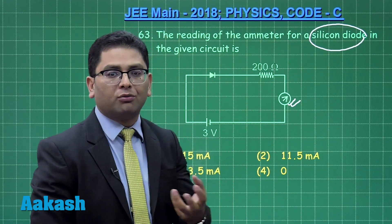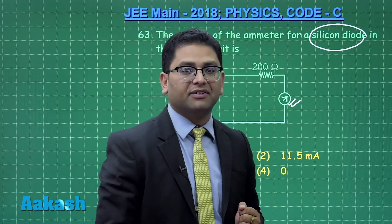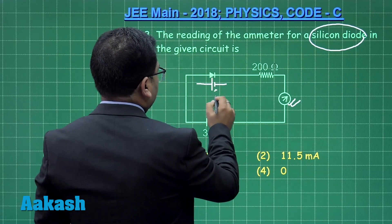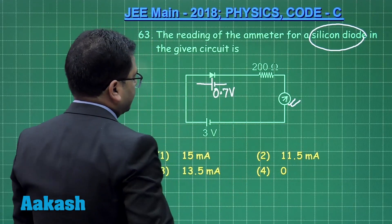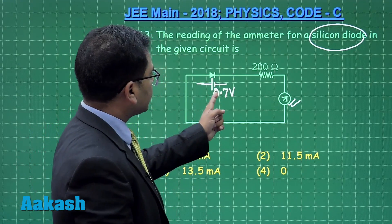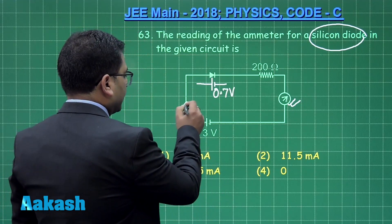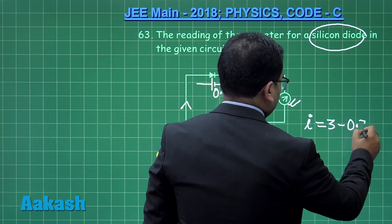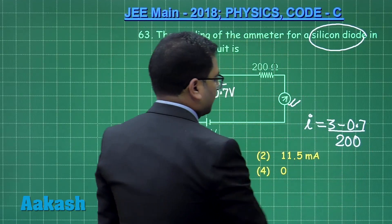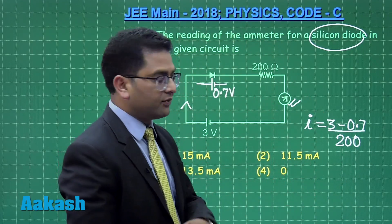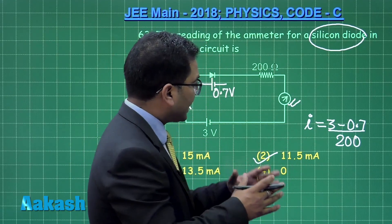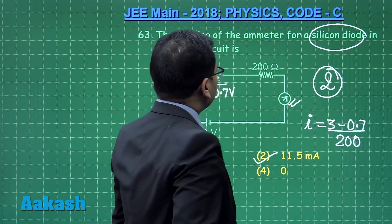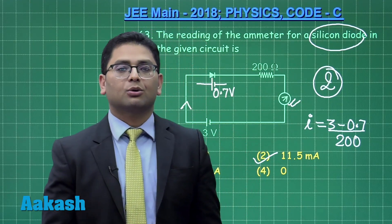Since the diode is not stated as ideal, by regular convention we take it as a real silicon diode. For a silicon diode in forward bias, the potential drop is 0.7 V — that's a very common fact. So the diode can be replaced by a 0.7 V drop. With 3 V supply, 0.7 V drop, and 200 Ω resistance, the current is: I = (3 − 0.7) / 200 = 2.3 / 200 = 11.5 mA. This gives the correct option for question 63 as option 2.